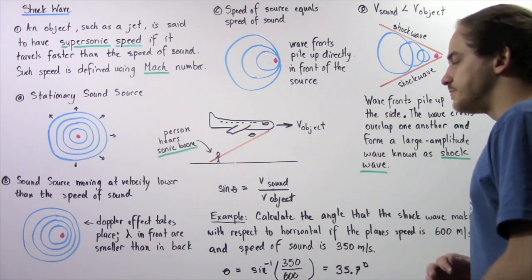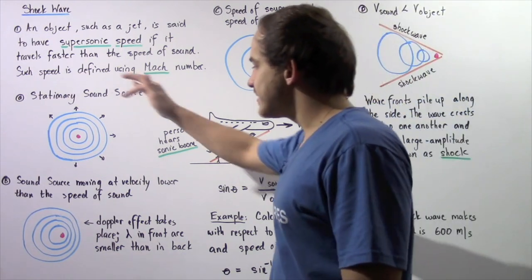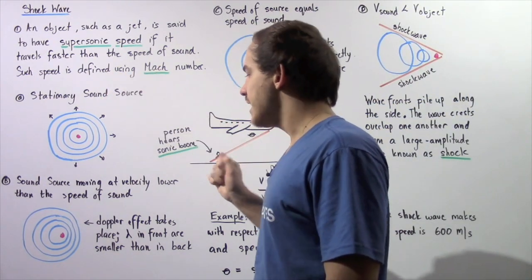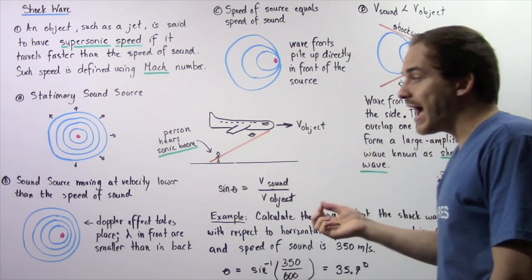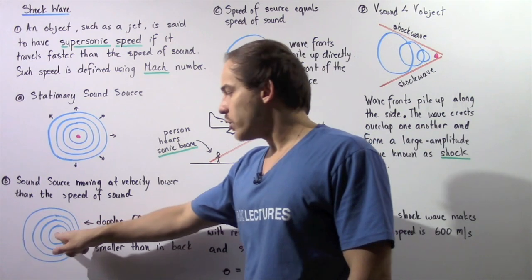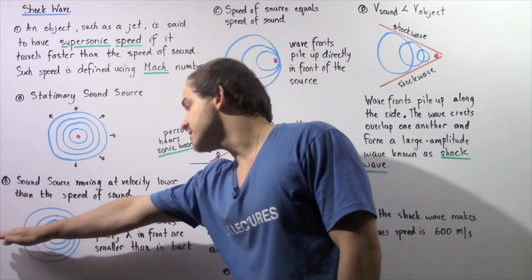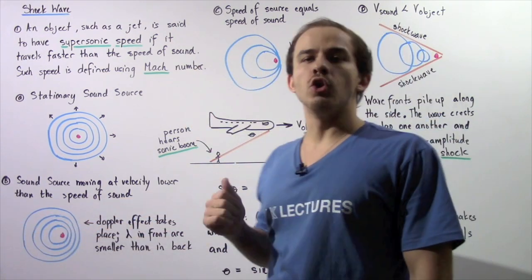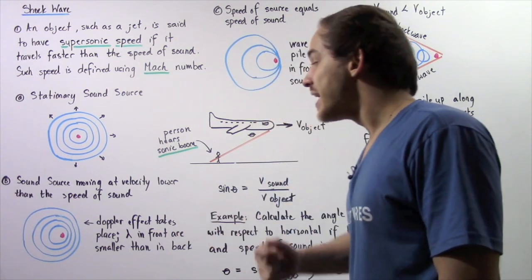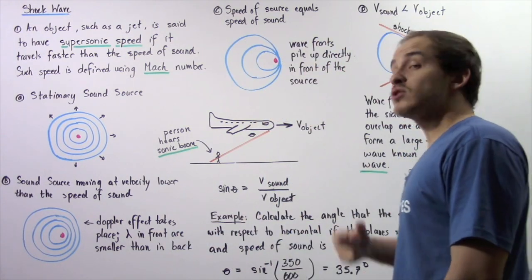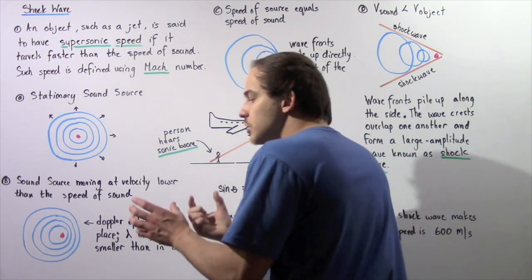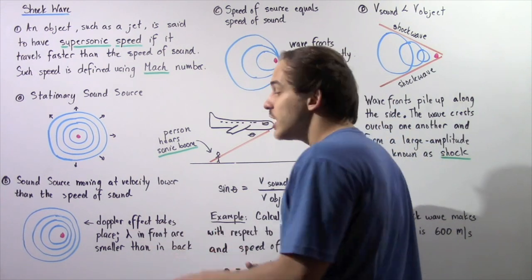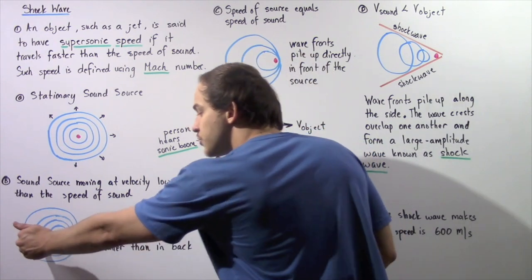So that means the frequency will also be the same and the Doppler effect will not be observed. Now, let's move on to case B. Suppose that the sound source is moving at a velocity lower than the speed of sound. So now, our sound source shown in red is moving, let's say, in this direction along the x-axis.